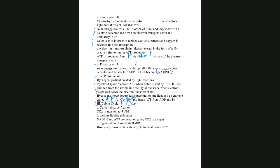The last topic is the Calvin cycle, sometimes referred to as the dark reactions. It doesn't have to occur in the dark — it just means this reaction does not directly make use of light. However, it is dependent on the products of the light reactions: remember, the light reactions produced ATP and NADPH, which are going to be needed in the Calvin cycle.